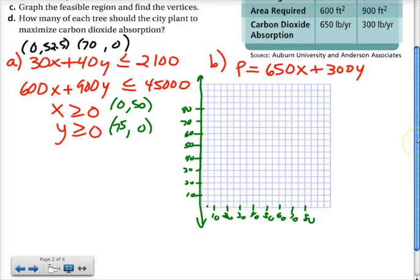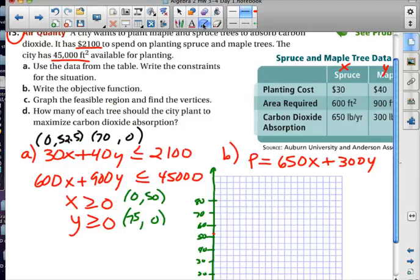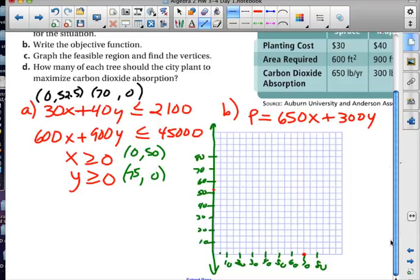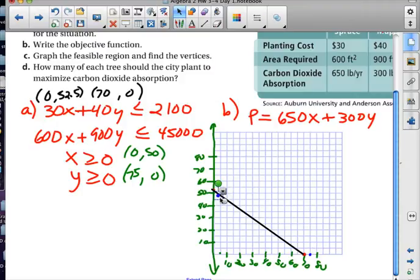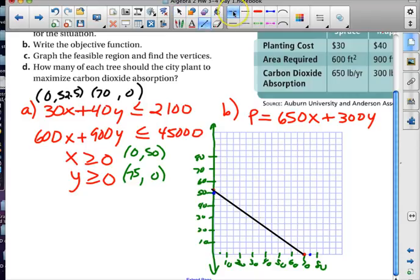So now I have my (0, 52.5) and (70, 0), and I'm going to get out of the full screen so that I can cheat and get a little segment drawer here to try to do this as accurately as possible. Just mimicking what your ruler would do if you're using a ruler for this one. And then the second one was going to be (0, 50) and (75, 0).